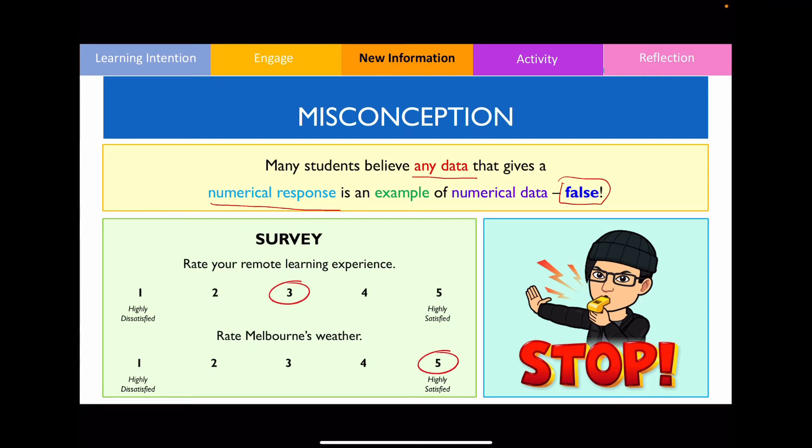On first glance, it may appear that the response that you're collecting is an example of numerical data. However, since each of these numbers have some kind of label or description associated with them, this is an example of categorical data instead.